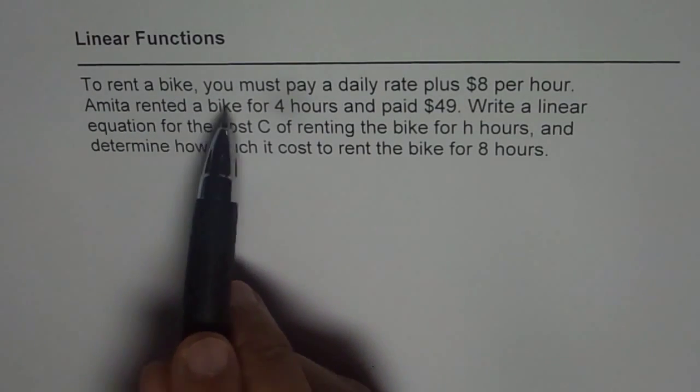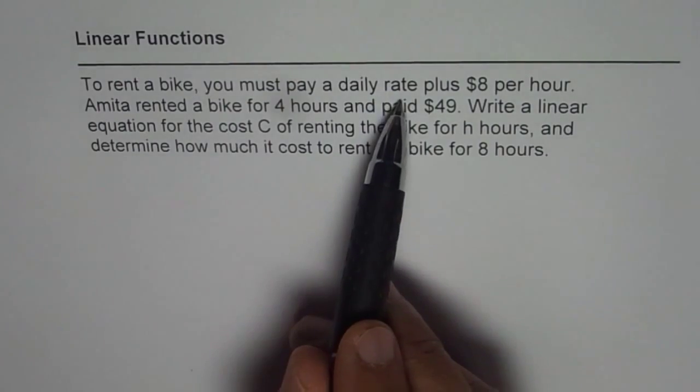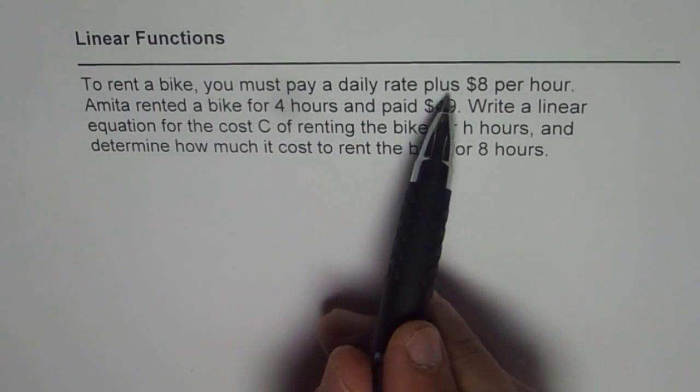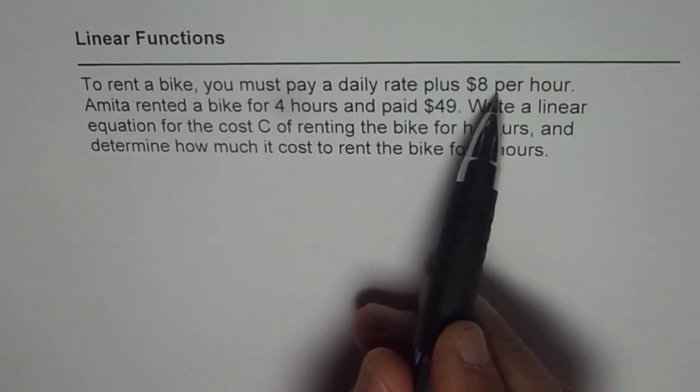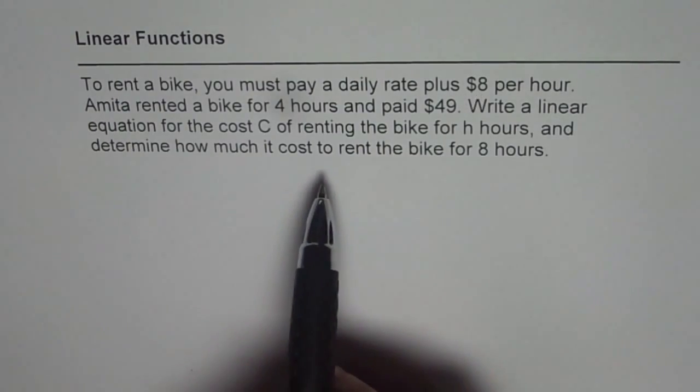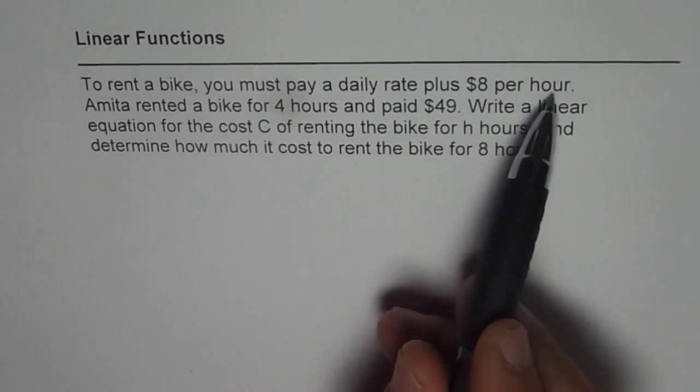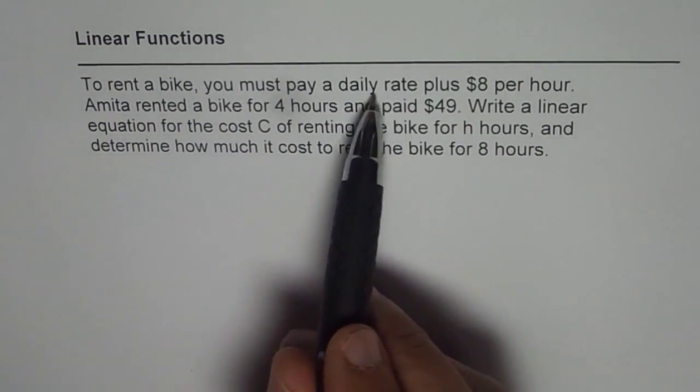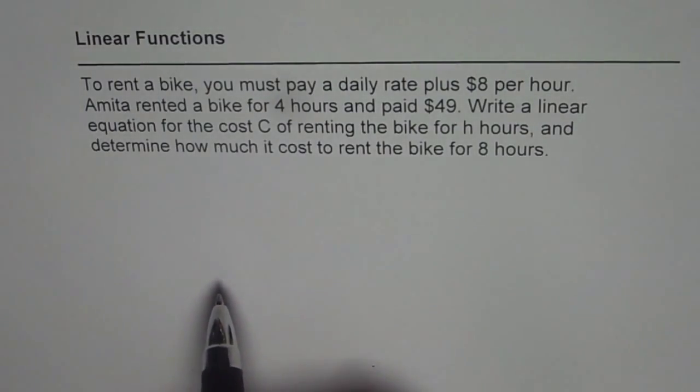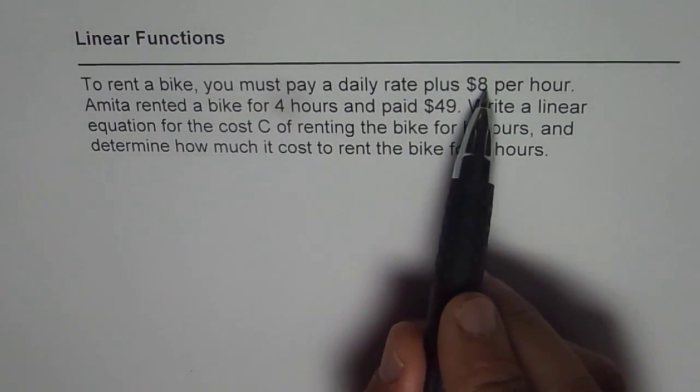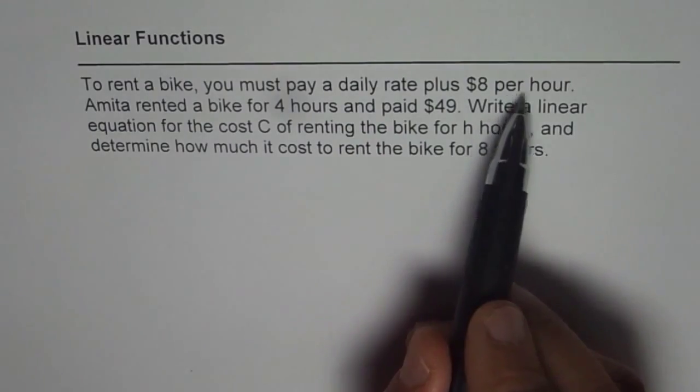To rent a bike, you must pay a daily rate plus $8 per hour. So $8 per hour is a variable cost. It changes with hour and a daily rate is a fixed cost. Now since there is a rate, we are looking forward for a linear function, right?